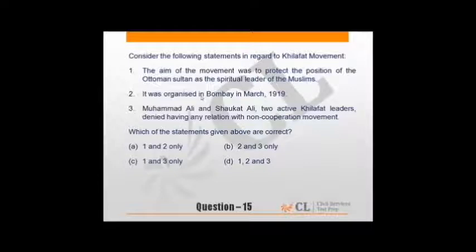Statements regarding Khilafat movement. We know Khilafat movement along with non-cooperation movement made it very successful. The aim was to protect position of Ottoman Sultan as spiritual leader of Muslims. After World War I, when Ottoman Turks lost, the caliphate of Turkey ended. It was organized in Bombay in March 1919. Muhammad Ali and Shaukat Ali were denied having relation - rather, they supported non-cooperation movement and were instrumental in making Khilafat movement very successful. So third option stands wrong, 1 and 2 stand correct.